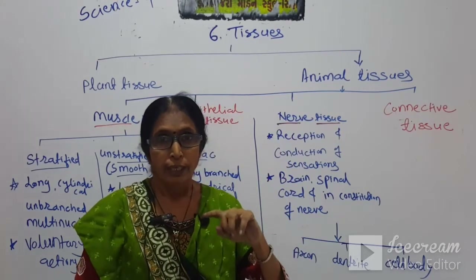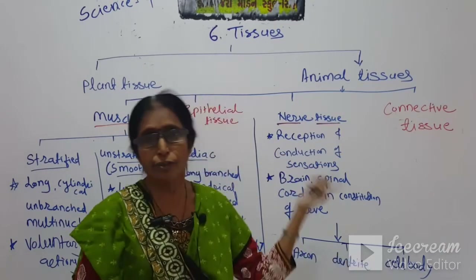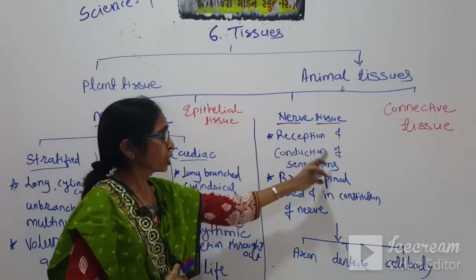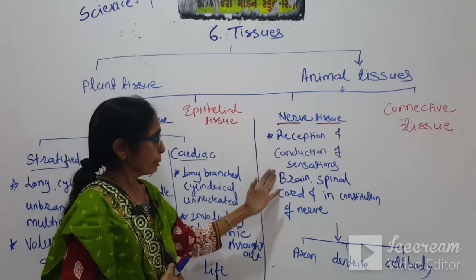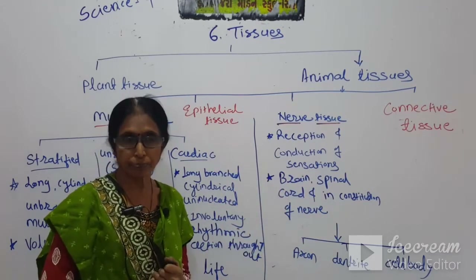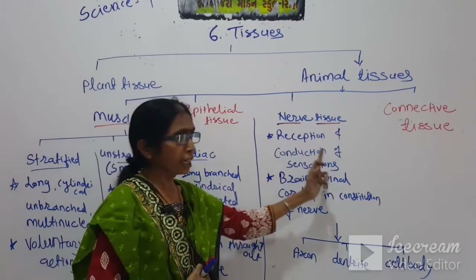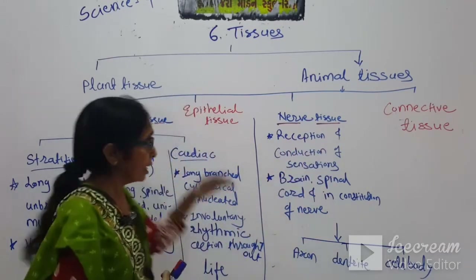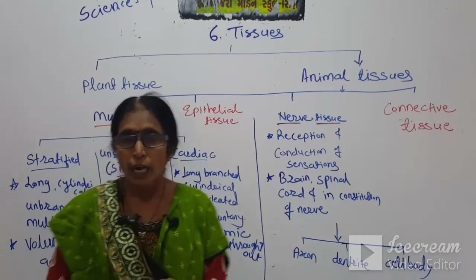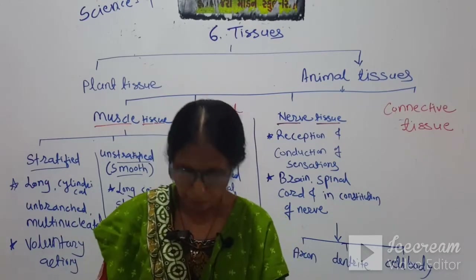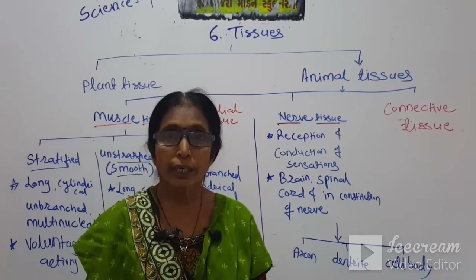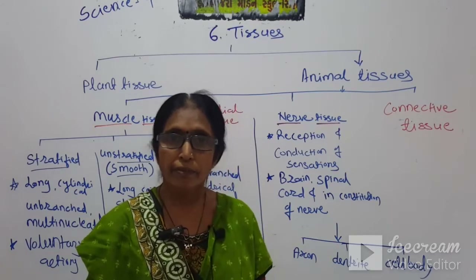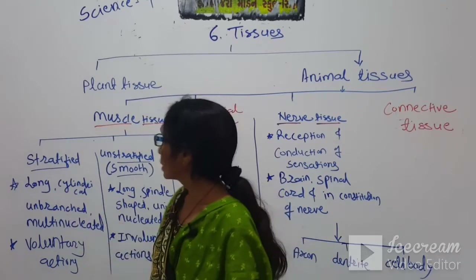It means to and fro — they take the message to the brain and from the brain to the organ of the body. So nerve tissue involves reception and conduction of sensation. They are connected to the brain and spinal cord. In your textbook, about muscle tissue is on page number 77 and about nerve tissue is on page number 78. But here we will learn about nerve tissue first and then muscle tissue.